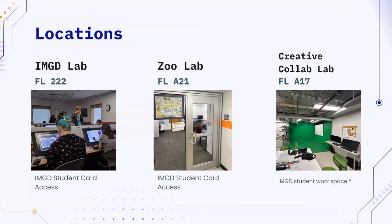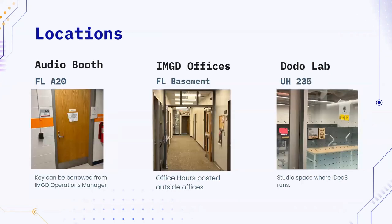Also in the sub-basement there is the Creative Co-Lab, aka the Sprinkler Room — another IMGD space where you can go and work at any time. There's also the audio booth in the sub-basement. You must come by the IMGD lab or offices and talk to Allison about getting a key to borrow for that room. They have a nice little audio booth and it's well soundproofed. The IMGD offices are easier to find because they have a big IMGD sign on the top. In the basement of Fuller, pretty much the entirety of that basement is dedicated to IMGD offices. Pop by whenever and talk to your professors during office hours.